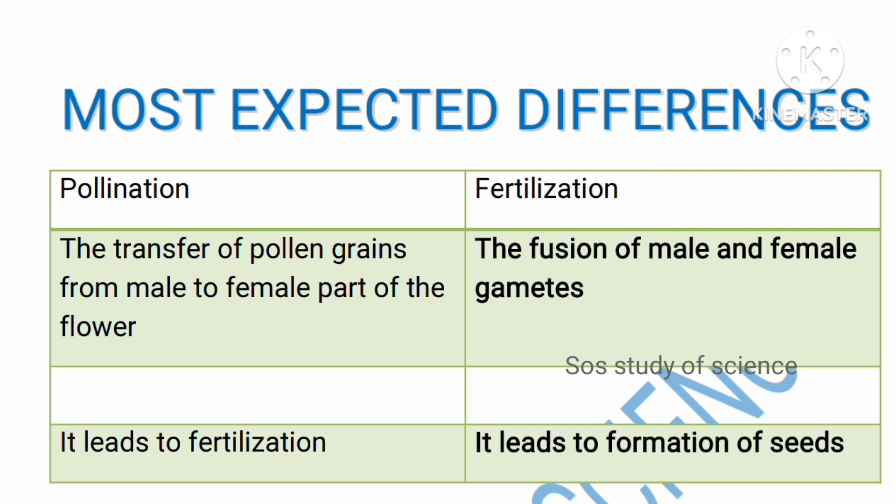In today's video I am discussing about the most expected differences that can be asked in the examination. For example, the recent Karnataka School of Education and Assessment Board released question paper had differences on arteries versus capillaries, arteries versus veins, and a comparison between capillaries present in the alveoli and capillaries in the Bowman's capsule, called the glomerulus. Previous year papers also had biodegradable and non-biodegradable, homologous and analogous — so one difference question will definitely be there in the paper.